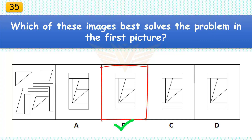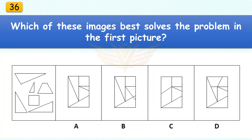Which of these images best solves the problem in the first picture? The correct answer is B. There are seven pieces in the assembled puzzle.